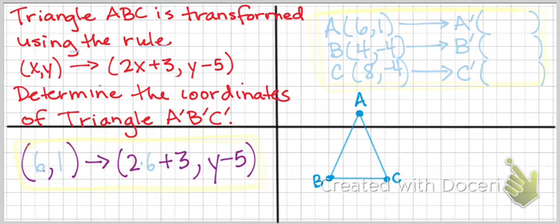And our new Y is going to be our original Y, which is 1, minus 5. So what do we get? What's 2 times 6? 12, plus 3, 15. And 1 minus 5 is negative 4. So our new point for A, our A prime, is (15, -4).